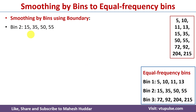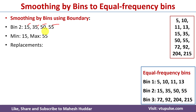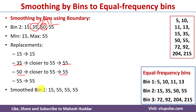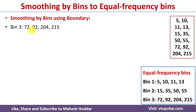Similarly for the second bin, the minimum is 15 and maximum is 55, so we keep those as is. For 35: 35 is closer to 55, so we replace 35 with 55. For 50: 50 is also closer to 55, so we replace 50 with 55, and 55 stays as 55. The smoothed bin 2 becomes: 15, 55, 55, 55.